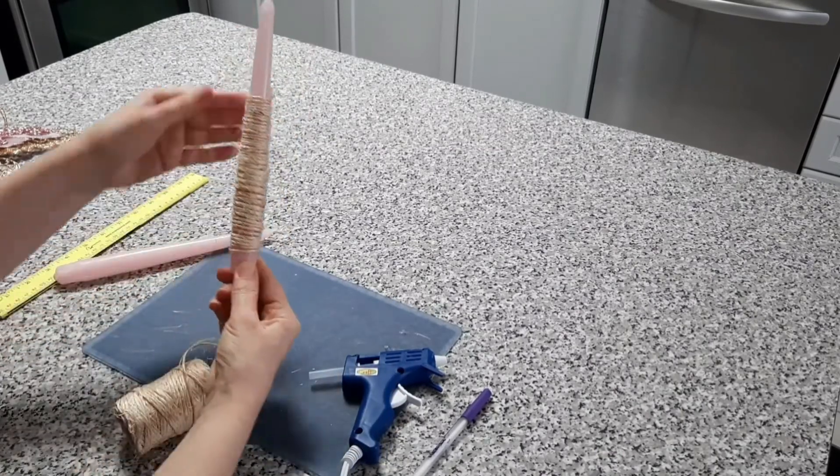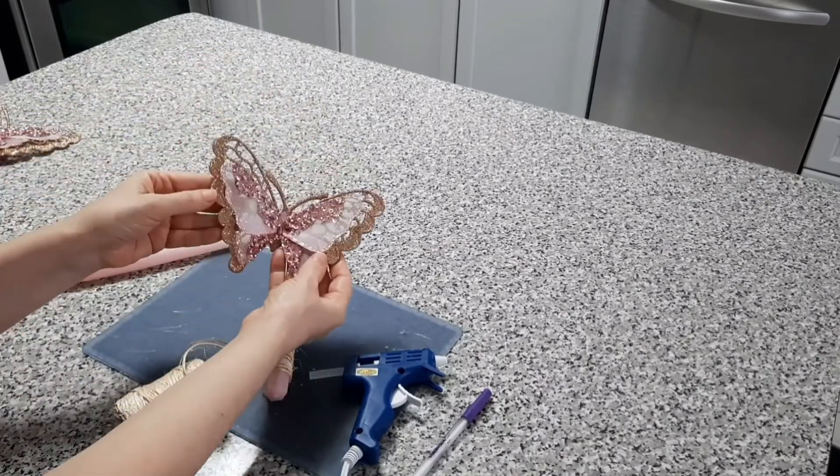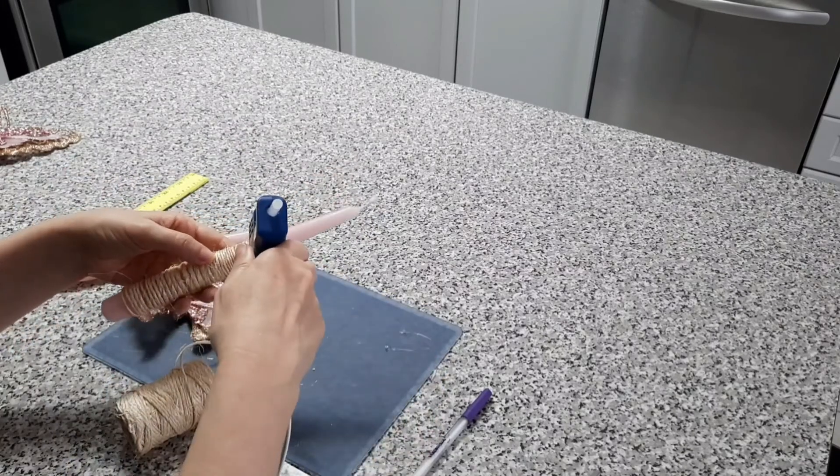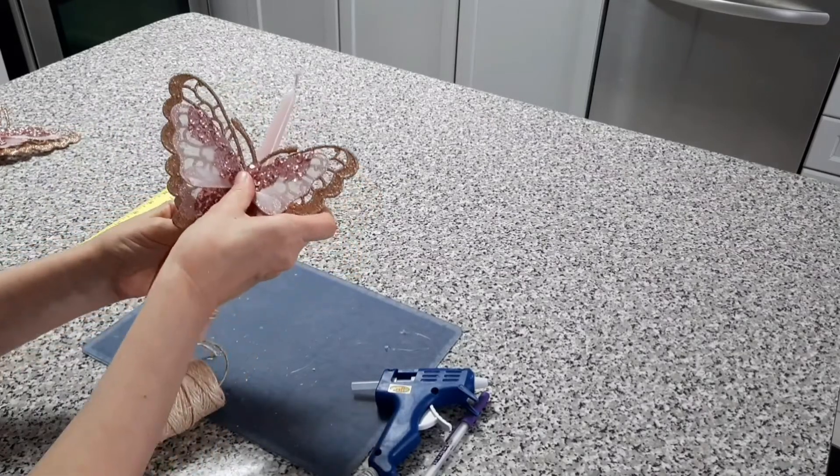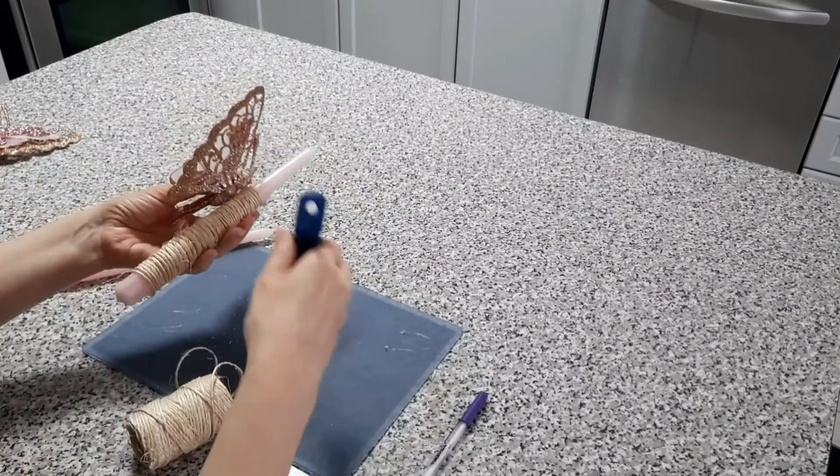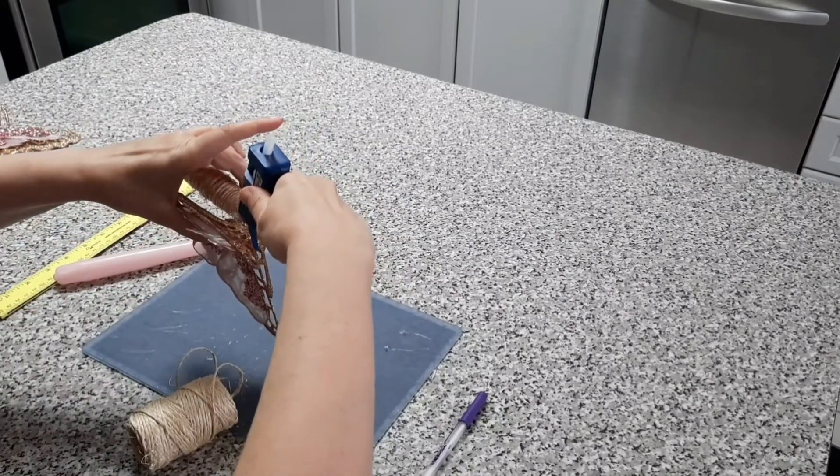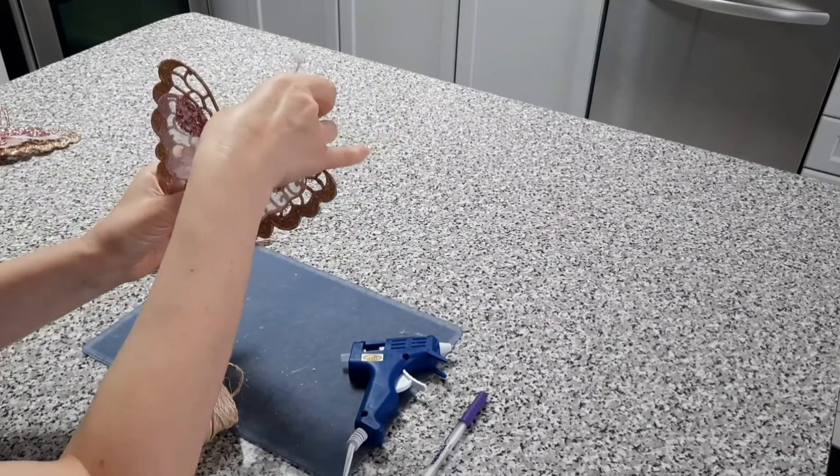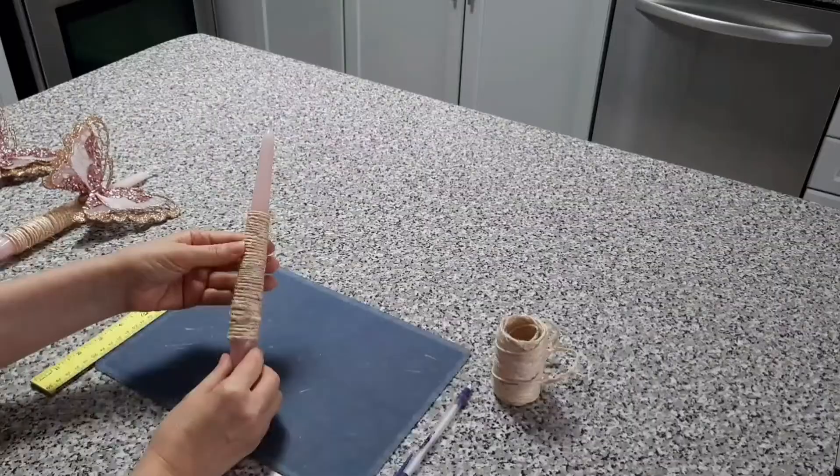And that's what it looks like so far. To this rustic twine I'm going to glue on this sparkly pink and gold butterfly ornament. It's actually a Christmas ornament but I think it's so pretty in the pink that I'm going to use it for spring. I'm gluing it to our candle, ensuring that it's secured nicely and that's what it looks like.